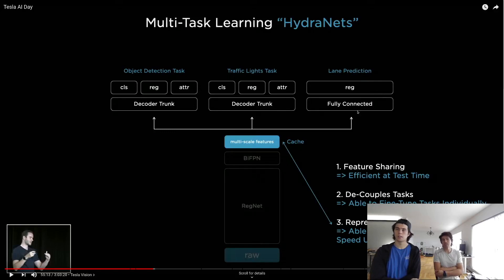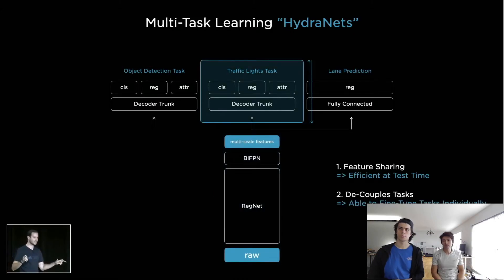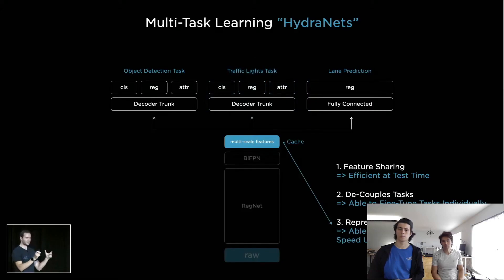Three advantages in this kind of architecture: you don't have to run this whole part of the pipeline for each one of these tasks. You amortize the forward pass inference in the car at test time. This decouples all of the tasks so we can individually work on every task in isolation because there's this bottleneck here in features.